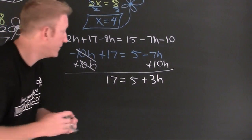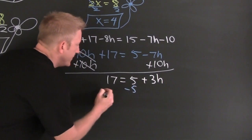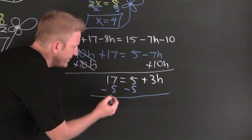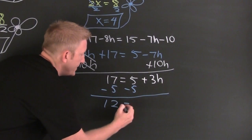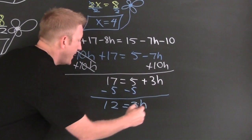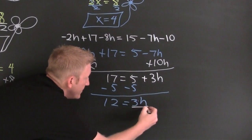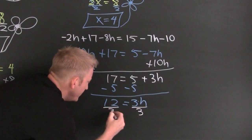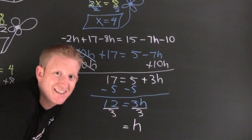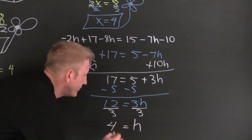Still trying to get h by himself. So I'm going to subtract 5 from both sides. And then 17 minus 5 is 12, and that's going to be equal to 3h. How do I undo that multiplication? Division — I'm going to divide both sides by 3. 12 divided by 3 is 4.